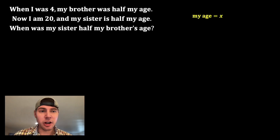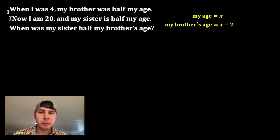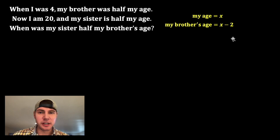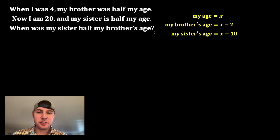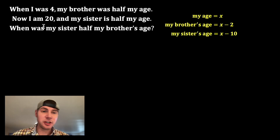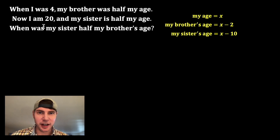So first I'm going to call my age X. My brother's age would be X minus two, because when I was four he was two, which is two years younger than me. And my sister's age would be X minus 10, because when I was 20 she was 10, so she would be 10 years younger than I was.